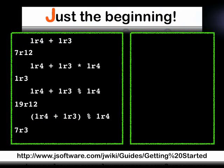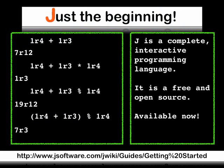J is a complete interactive programming language. It's free and open source, and it's available now.